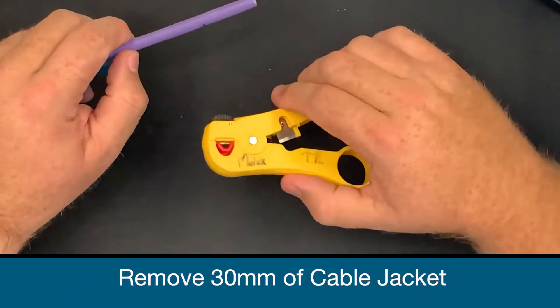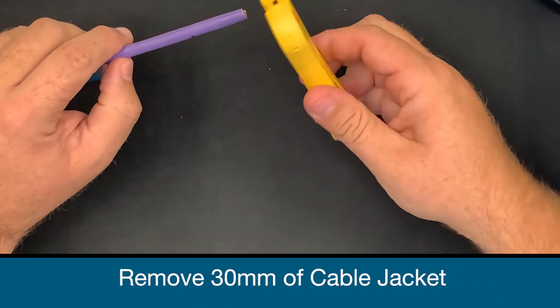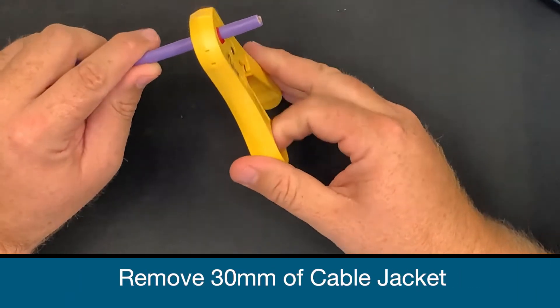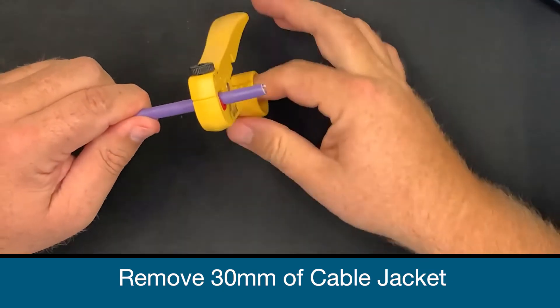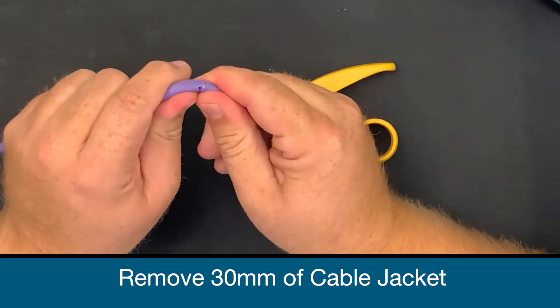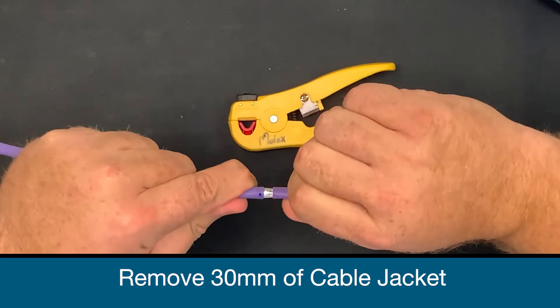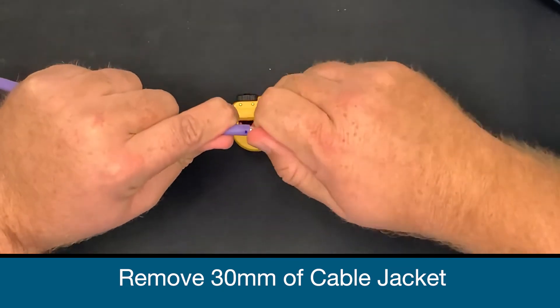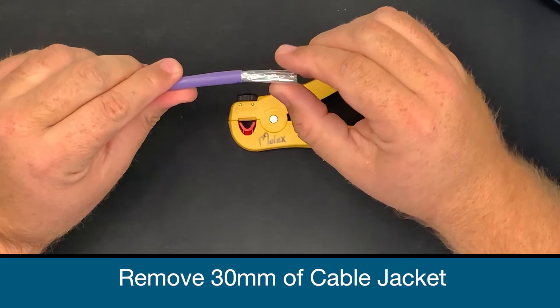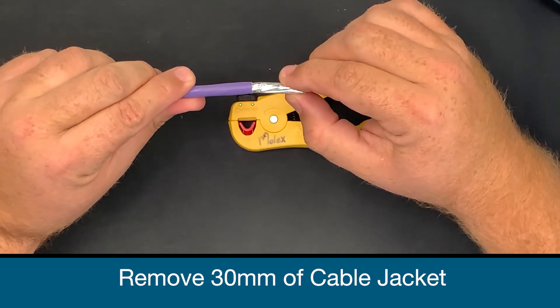Firstly, you need to cut off 30mm of cable jacket. Only turn around once. You can take it off. Make sure you never cut in too deep into your cable to cut off your foil and drain wire.